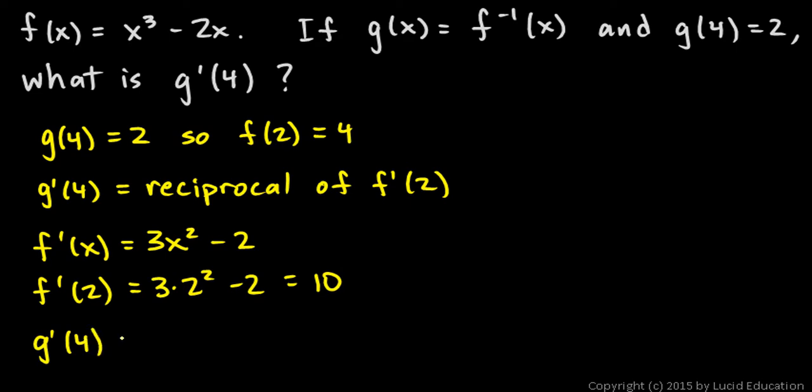So g primed of 4, which is what we're looking for, is simply the reciprocal of that, 1 tenth.